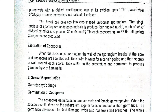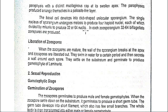The basal cell develops into a club-shaped unilocular sporangium. The single nucleus of this sporangium undergoes meiosis, producing four haploid nuclei, each of which then divides by mitosis to produce 32 or 64 nuclei. So in each zoosporangium, 32 to 64 biflagellated zoospores are produced.